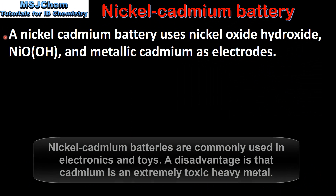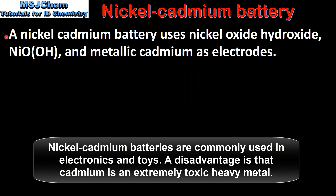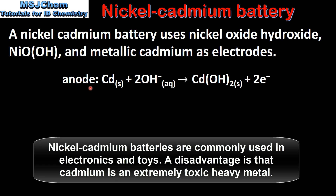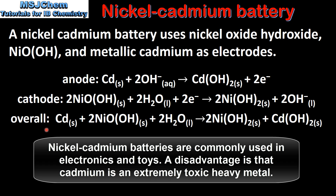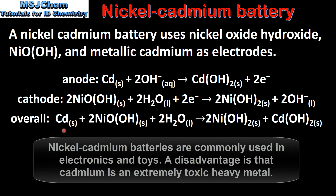Next we look at nickel cadmium batteries. A nickel cadmium battery uses nickel oxide hydroxide and metallic cadmium as electrodes. At the anode, cadmium is oxidized to form cadmium hydroxide. At the cathode, nickel oxide hydroxide is reduced to form nickel hydroxide. When the battery is recharged, the reverse reactions take place.